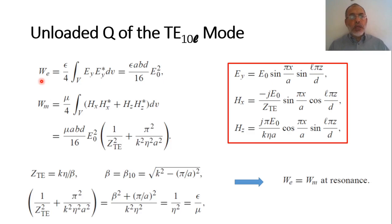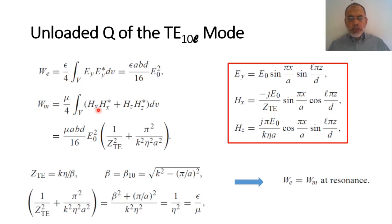The stored magnetic energy is Wm = (μ/4)·∫∫∫ (|HX|² + |HZ|²) dV, since there is no HY component. HX·HX* equals E₀²/ZTE² multiplied by sin²(πx/a) multiplied by cos²(Lπz/D). Integrating over x gives a/2, over z gives D/2, and over y gives b, so the HX contribution yields μ·ABD·E₀²/(16·ZTE²).